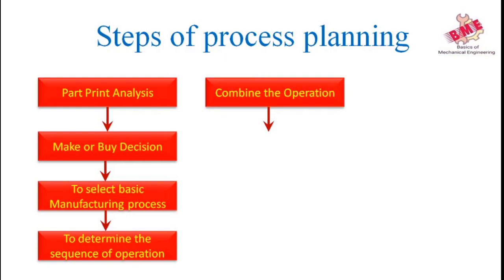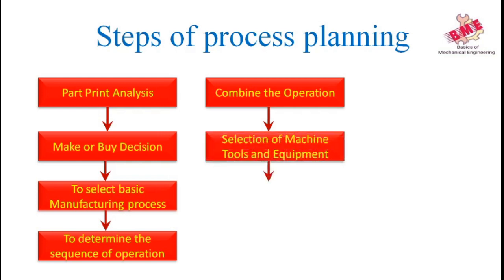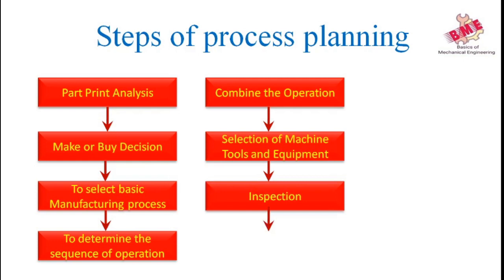The fifth step is to combine operations — as many operations as possible should be combined to reduce the production cycle. Operations can be combined by simulation or integration, where simulation involves combinations where two or more operations are performed simultaneously. The sixth step is selection of machine tools and equipment — depending on quantity of product, quality, surface finish required, cost, and type of material, the machines and tools are selected. For example, for manufacturing a hard material product, the appropriate type of tool must be selected. At the inspection stage, we set inspection checkpoints, such as checking the shaft diameter with a vernier caliper after turning.